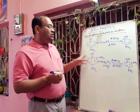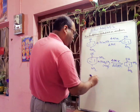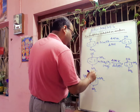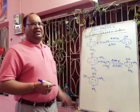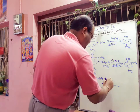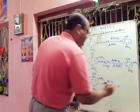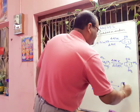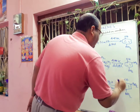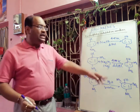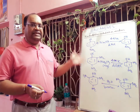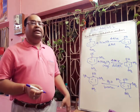Now if we add another nitro group to get 2,4,6-trinitrochlorobenzene, the reaction becomes so facile that even water is sufficient as the nucleophile — no strong base is required. The product is 2,4,6-trinitrophenol, commonly known as picric acid. These reactions are also called ipso-substitution reactions.